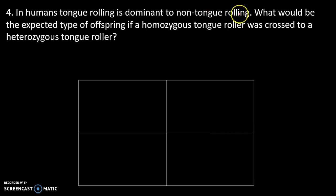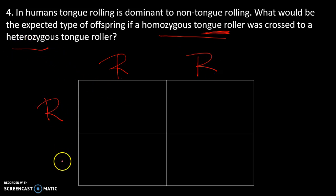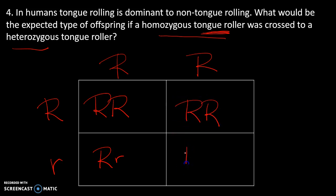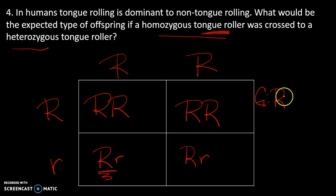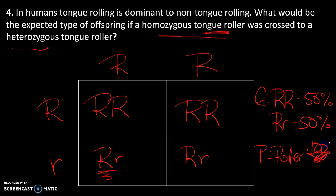Number four: in humans, tongue rolling is dominant to non-tongue rolling. What offspring are expected if a homozygous tongue roller is crossed with a heterozygous tongue roller? Homozygous tongue roller, since it's dominant, is capital T capital T. Heterozygous is capital T lowercase t. When we fill the cross in — one thing to note, we always put the capital letter first — genotypically we have a 50% chance of homozygous dominant and 50% heterozygous. Phenotypically, 100% of offspring will be tongue rollers.